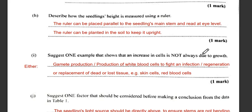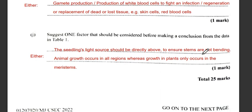For an example showing that an increase in cell number is not always due to growth — we can mention GMT (production of white blood cells) to help fight an infection, as well as regeneration or replacement of dead or lost tissue, for example skin cells or red blood cells.